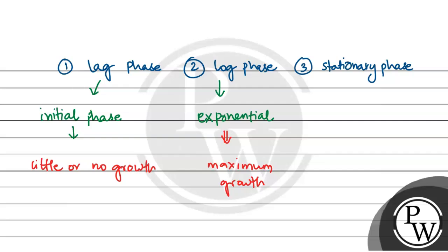Third is stationary phase. In the stationary phase, the net growth remains the same. Here the growth stops and we can say the net growth remains the same because there is equal rate of birth and death, equal rate of growth and death.